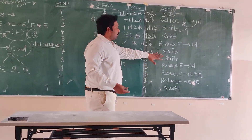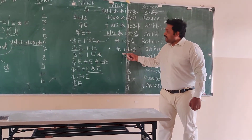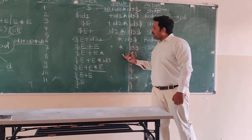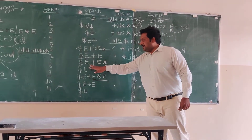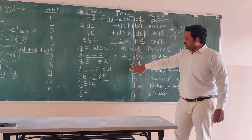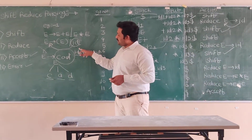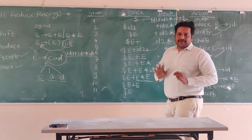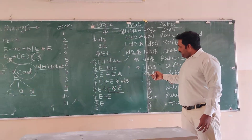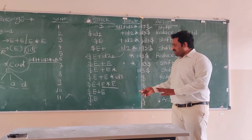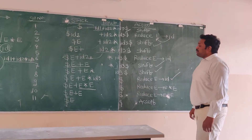The stack now has dollar E plus E star, and the input buffer has id3 dollar. There is no reduction available for E star in the grammar, so we perform nothing for this. Next, we apply the shift function and shift id3 into the stack. We know that id is reduced to E, so we apply the next function: reduce id to E. The stack now has dollar E plus E star E.